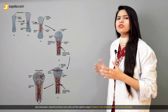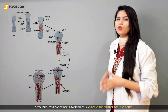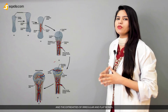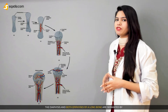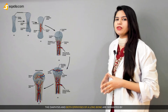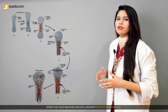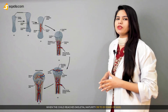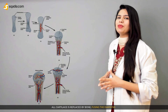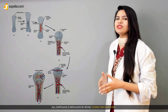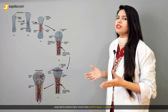Secondary ossification occurs after birth and forms the epiphysis of long bones and the extremities of irregular and flat bones. The diaphysis and both epiphyses of a long bone are separated by a growing zone of cartilage. When the child reaches skeletal maturity — 18 to 25 years of age — all cartilage is replaced by bone, fusing the diaphysis and both epiphyses together. This is known as epiphyseal closure.